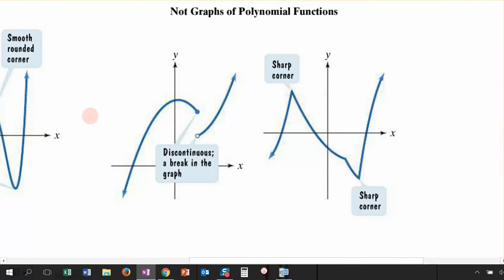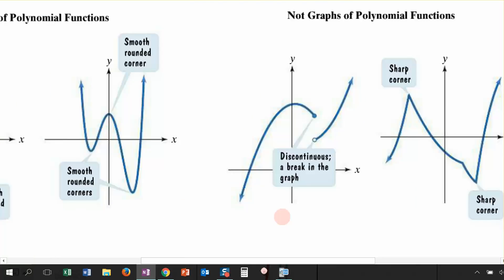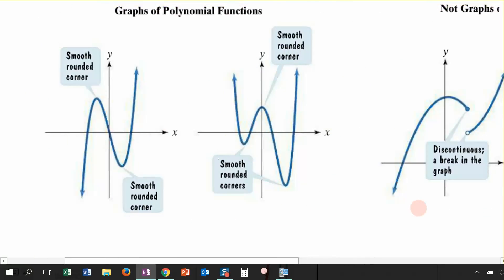Contrast that with these two pictures. These are not polynomial functions — they are discontinuous. They are not smooth at all; the graph itself has sharp corners. So these are not polynomial functions. For a graph to be smooth and continuous is another key characteristic of our polynomial functions.